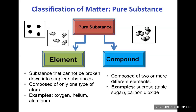A pure substance can also be a compound, which is composed of two or more different elements — you can give it a formula that must contain at least two different elements. For example, carbon dioxide (CO2) is a compound with a set formula. Sucrose, table sugar, has the formula C12H22O11 — made of carbon, hydrogen, and oxygen. Because you can give it a precise and fixed formula, it's a compound.